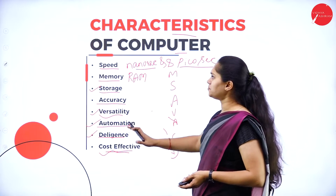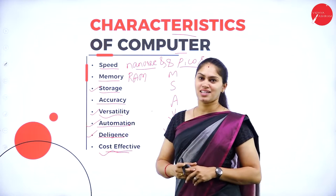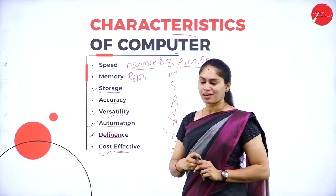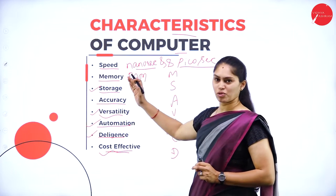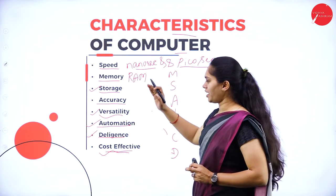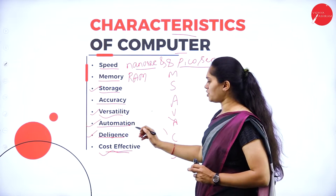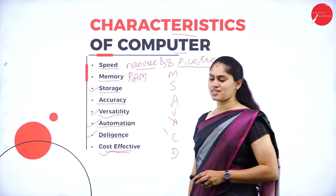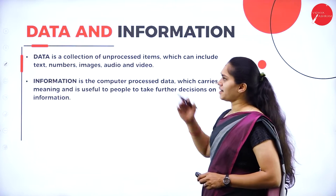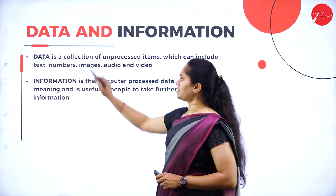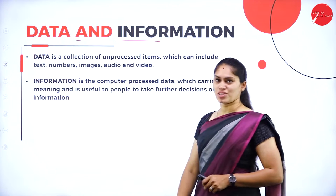These are the different characteristics of a computer system: Speed, Memory, Storage, Accuracy, Versatility, Automation, Diligence, and Cost Effectiveness. Next, we will see about data and information.